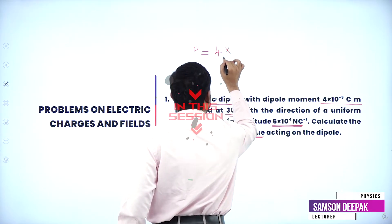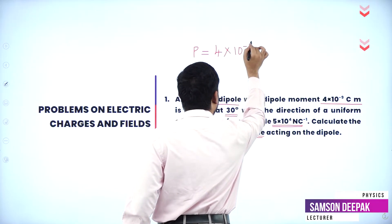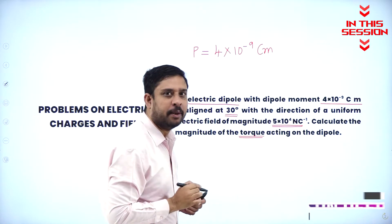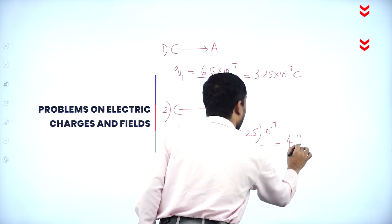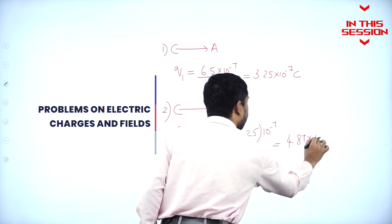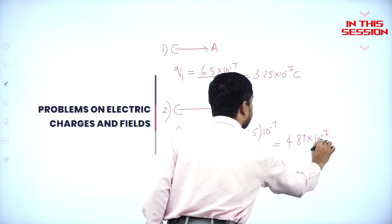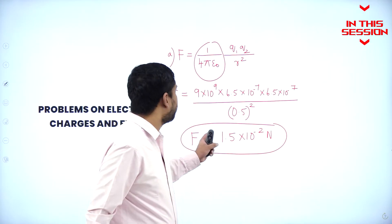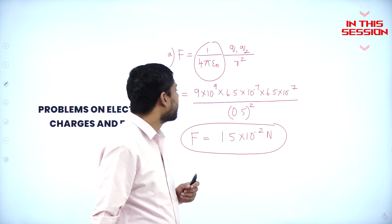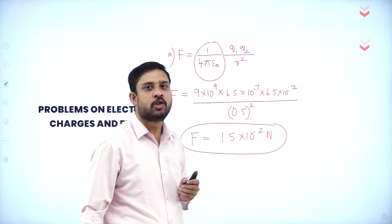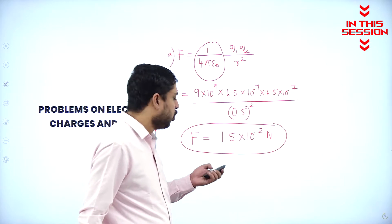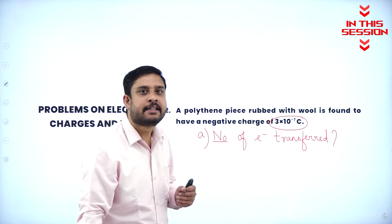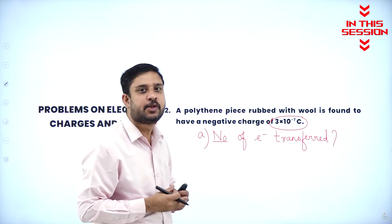Which is 4 into 10 power minus 9 coulomb meter. 4.87 into 10 power minus 7 coulomb. The mutual force of repulsion is 1.5 into 10 power minus 2 newton. How many electrons are transferred in this process?